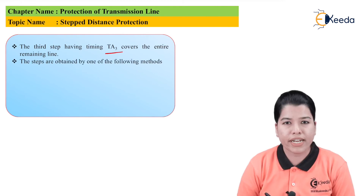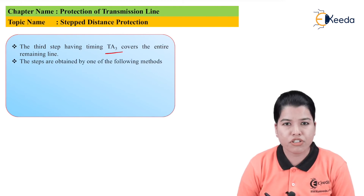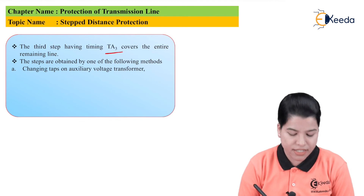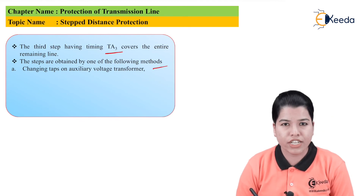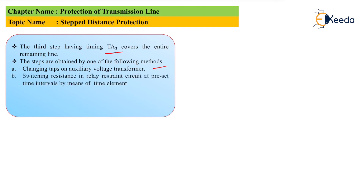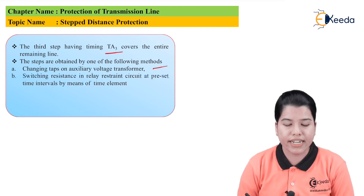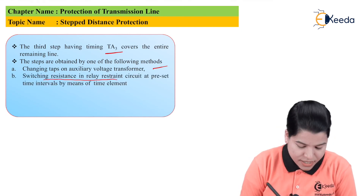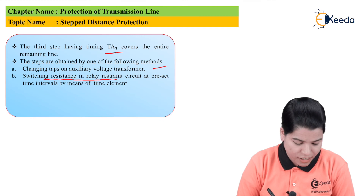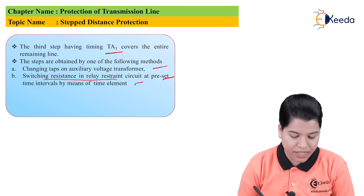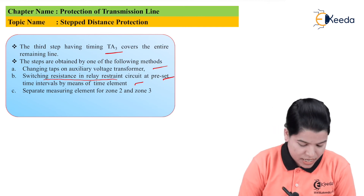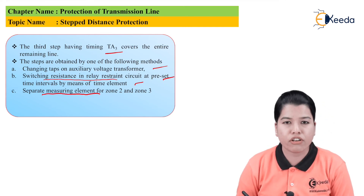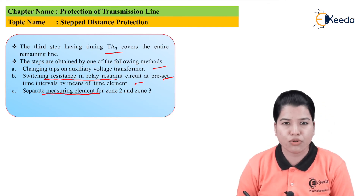The steps are obtained by the following procedure: first, by changing the taps on the auxiliary voltage transformer; second, by switching resistance in the relay restrained coil at preset time intervals by means of a time element; and third, by using separately measuring elements for zone 2 and zone 3.